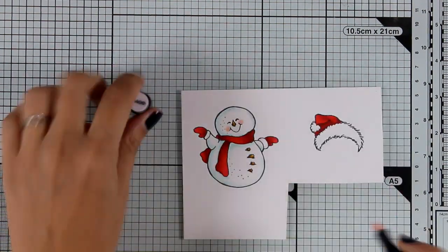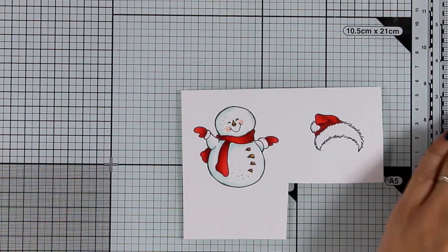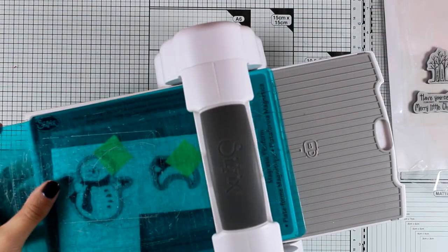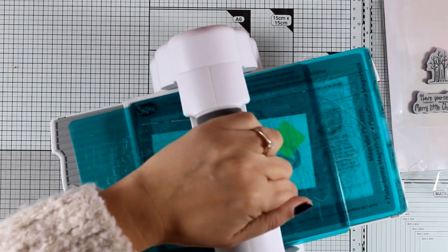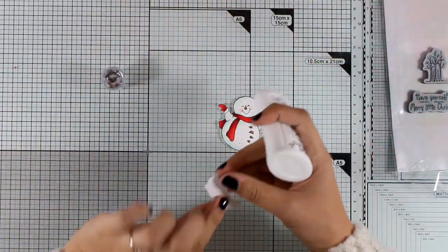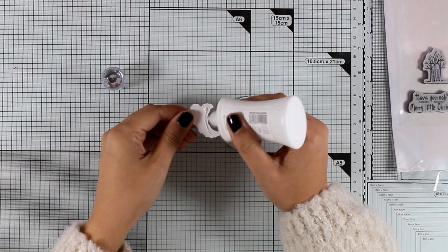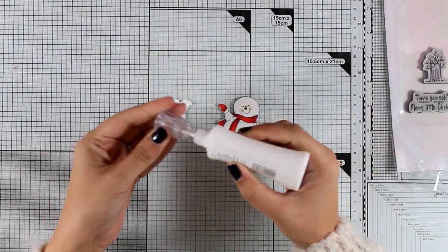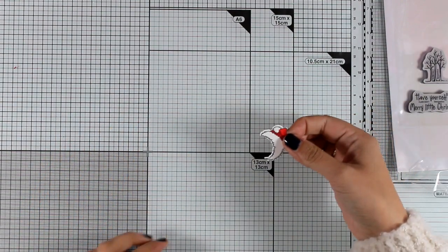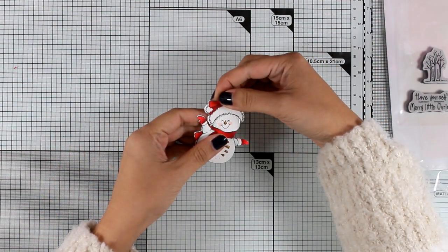Now I'm going to bring in the matching dies and cut everything out. The good thing about this set is that it comes with both stamps and dies in the same set. I'm adding some white glue at the back of the hat, and then I'm going to stick it on top of my snowman to complete my focal point. I think he is looking adorable.